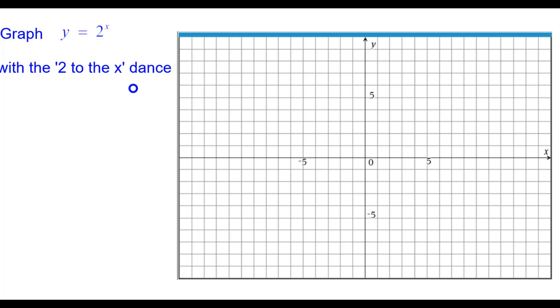Graph y equals 2 to the x with the 2 to the x dance. We'll start with the initial point at 0, 1 because 2 to the 0 power is 1.